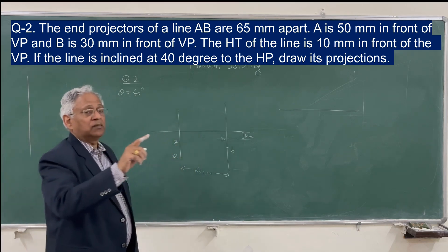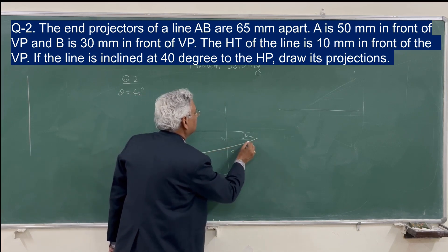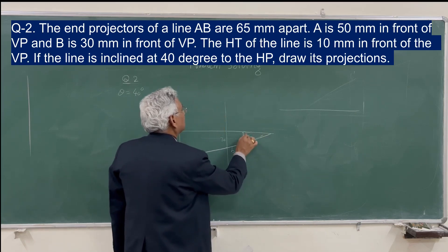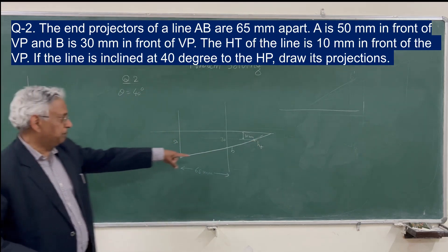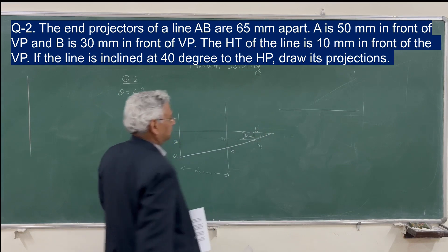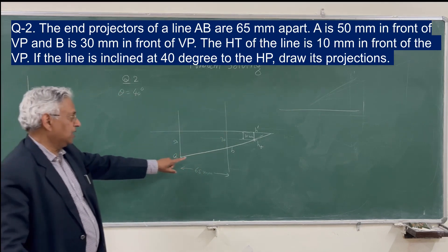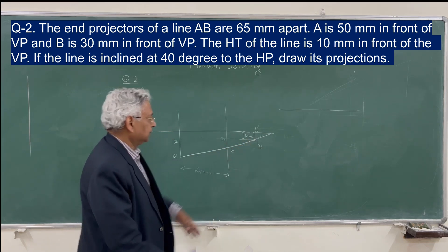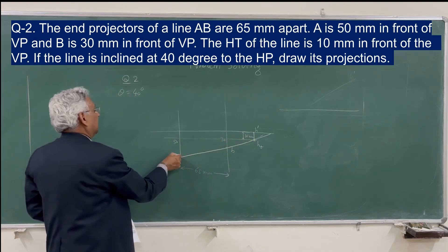Now, if you remember how we determine the horizontal trace: you join the plan of the line and extend it toward the ground plane. This gives the point of the horizontal trace. Since the horizontal trace HT lies at 10 mm, this point is the horizontal trace — at 10 mm, the extended plan. The theta angle is also known at 40 degrees to the horizontal plane.